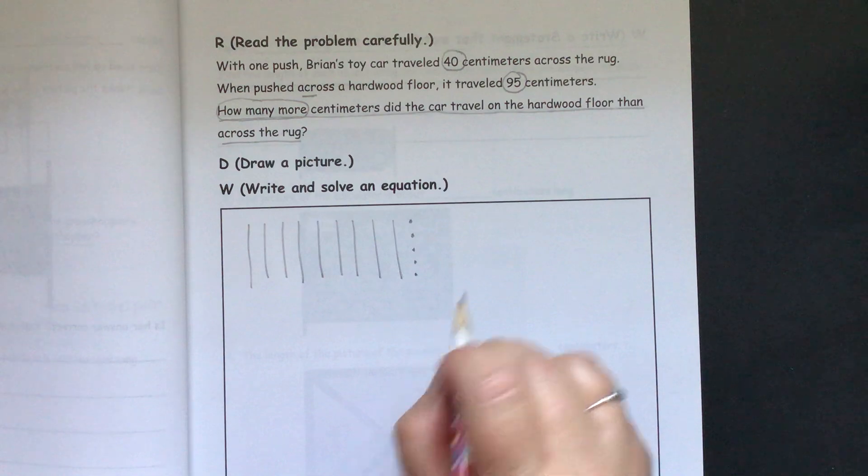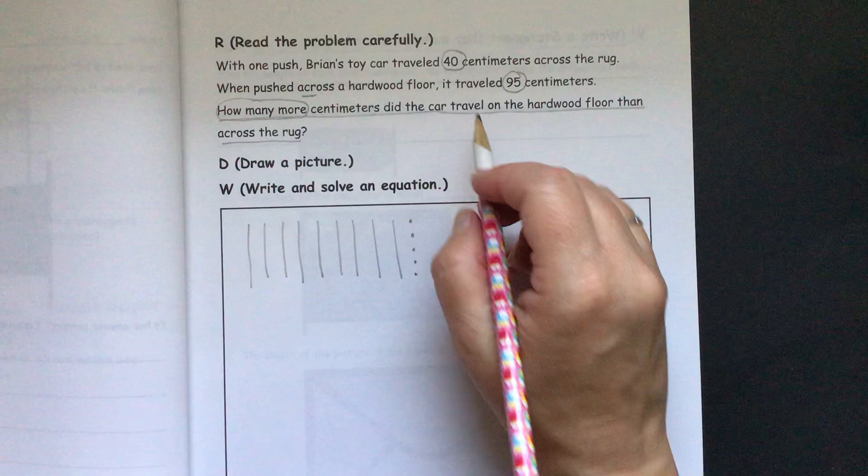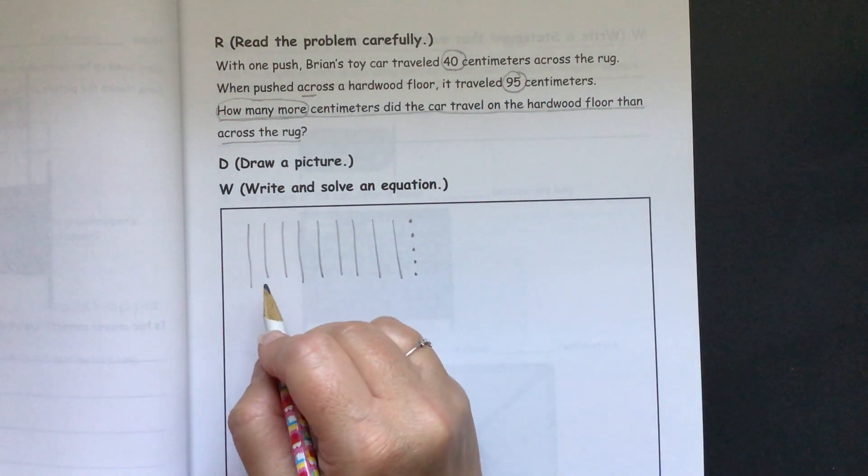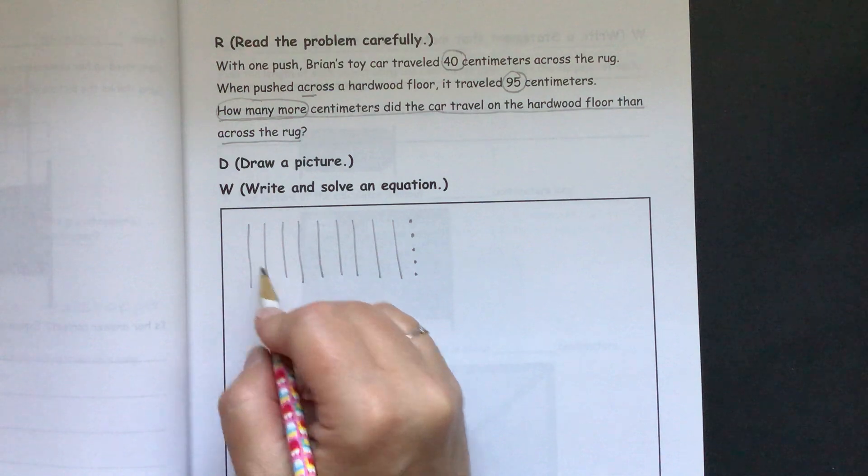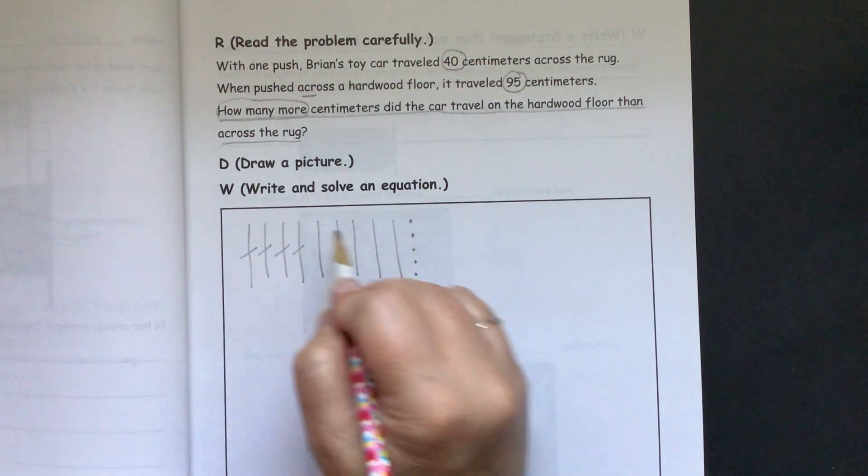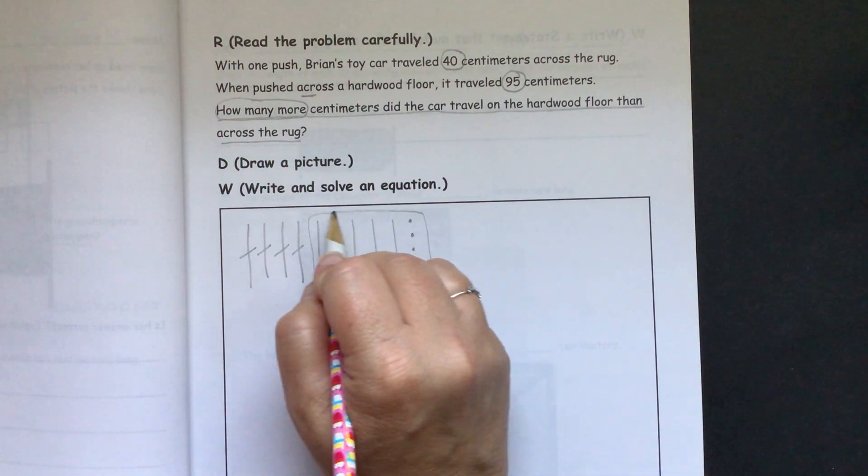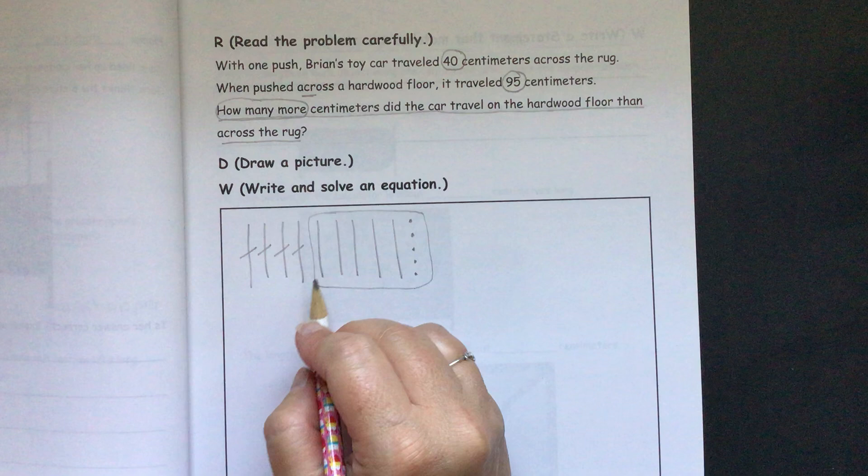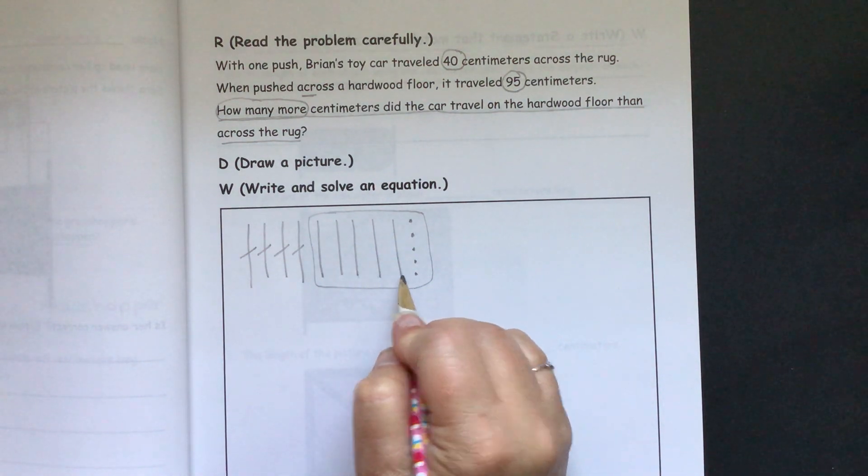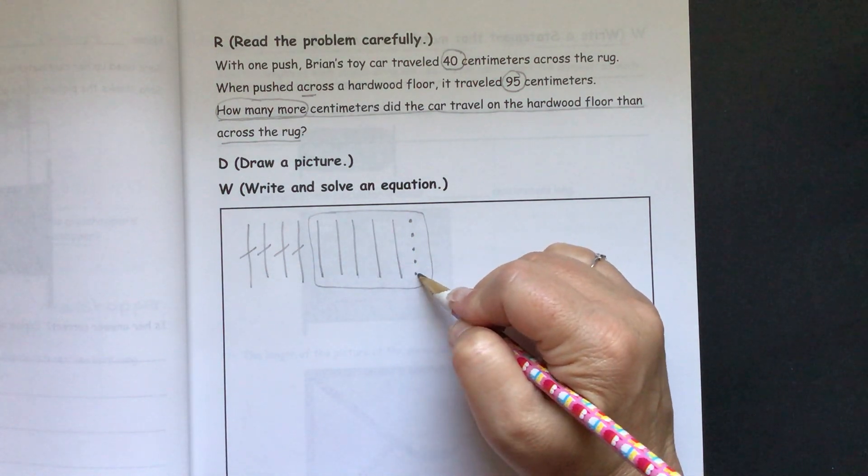And then we would need to take away 40, because we want to find out the difference. So we'll cross out 10, 20, 30, 40. And then count what we have left here. So we have 10, 20, 30, 40, 50, 51, 52, 53, 54, 55.